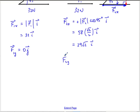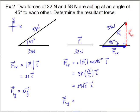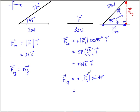F2 in the y-direction — that's the red vector going up, which is the positive y direction. It's the opposite side, so it goes with sine: magnitude of F2 times sin(45°). Sine and cosine of 45° are both √2/2, so F2_y is also 29√2, but in the j-direction.